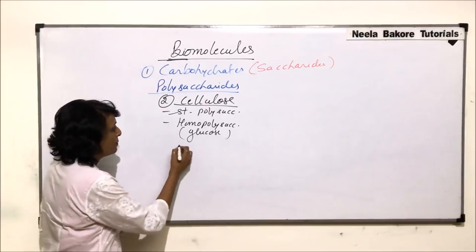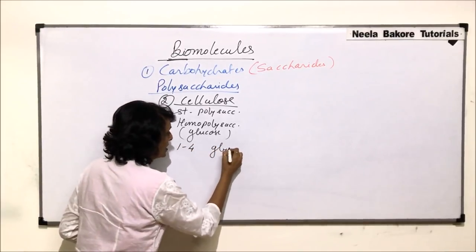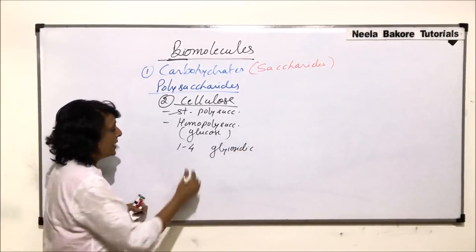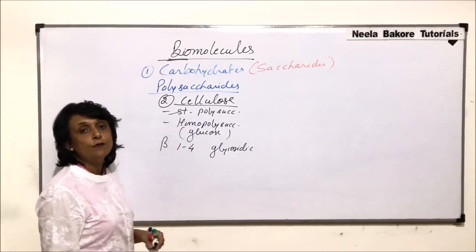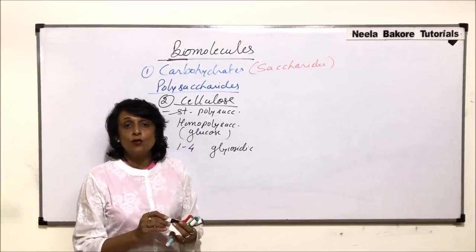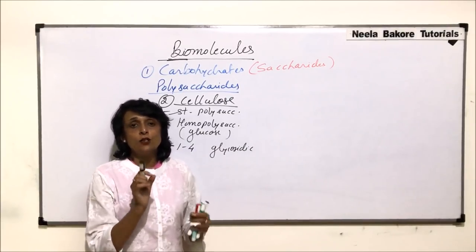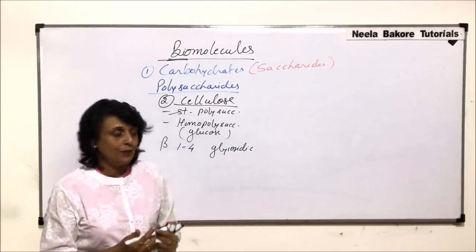Here the bond is 1,4 glycosidic bond, but the bond is beta 1,4 glycosidic bond. That means glycosidic bonds are also of two types, and this is totally on the orientation of functional groups on the carbons.